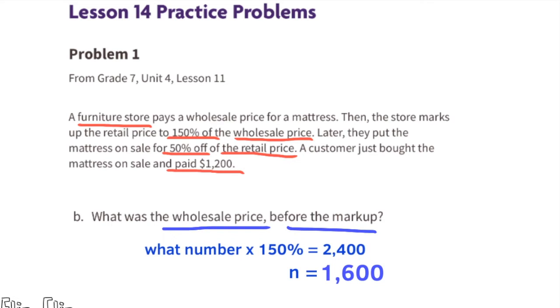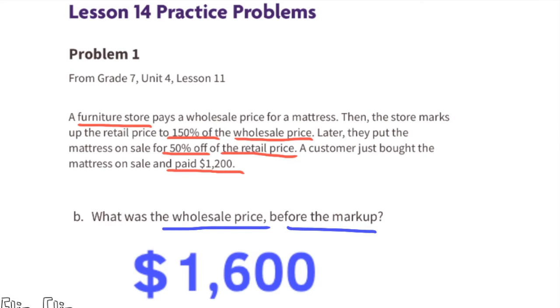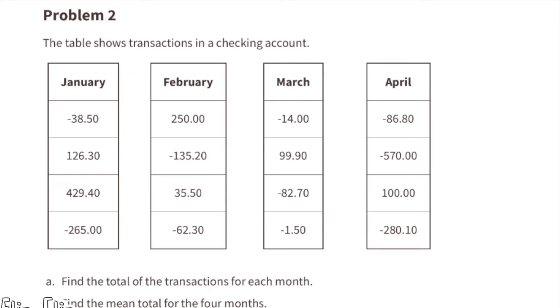n times 1.5 divided by 1.5 equals n, and on the right side, 2400 divided by 1.5 equals 1600. So the wholesale price before the markup was $1,600. Problem number two: The table shows transactions in a checking account.